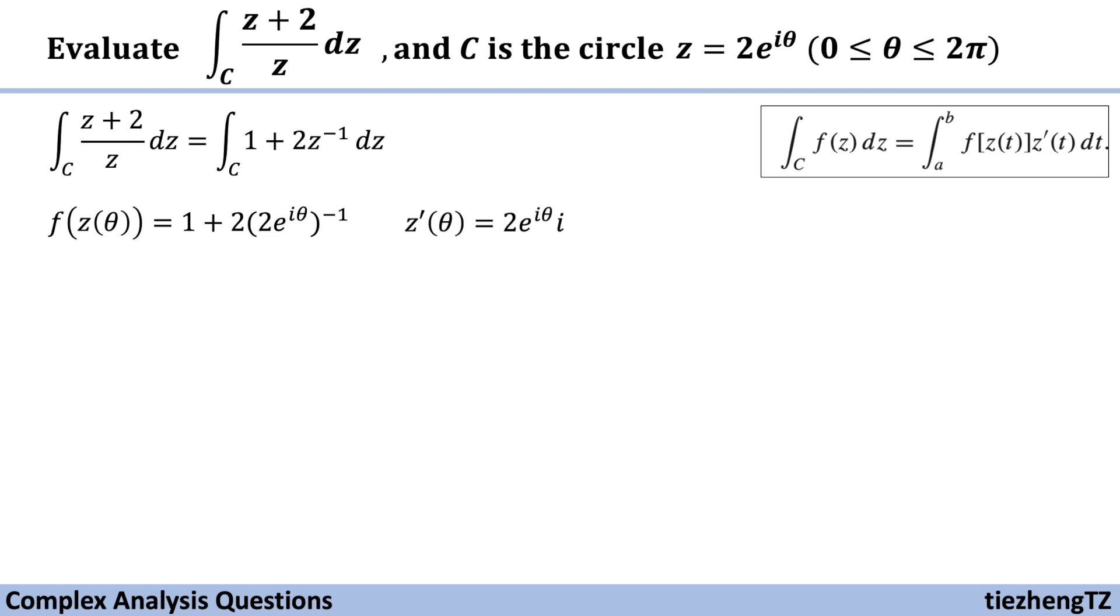So next, we just need to change and substitute integral from 0 to 2 pi, f z theta times z theta prime d theta.